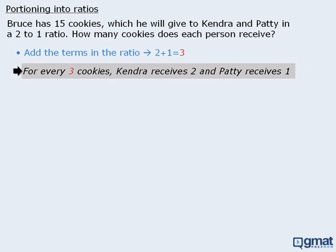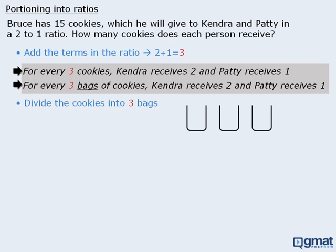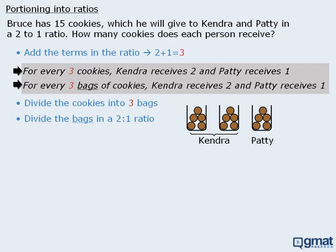Here comes the most important part. If we had three bags of cookies with equal amounts in each bag, we achieve the two to one ratio by giving Kendra two bags and Patty one bag. So we divide all 15 cookies evenly into three bags, placing five cookies in each bag. With three bags, Kendra gets two bags and Patty gets one bag — meaning Kendra gets ten cookies and Patty gets five cookies. Notice that the ratio of ten to five equals the target ratio of two to one.